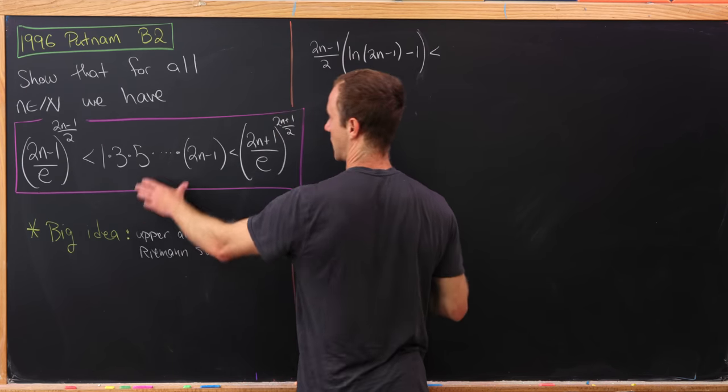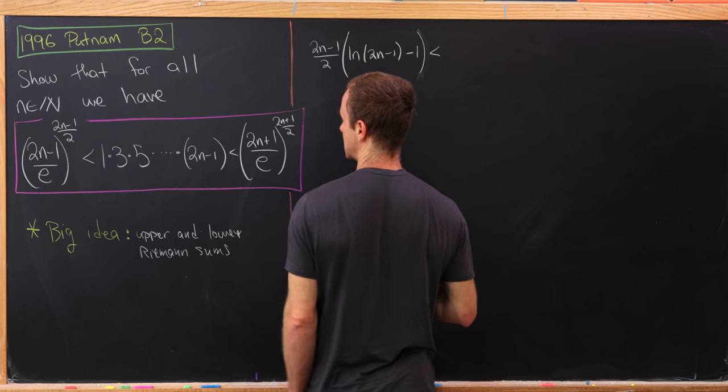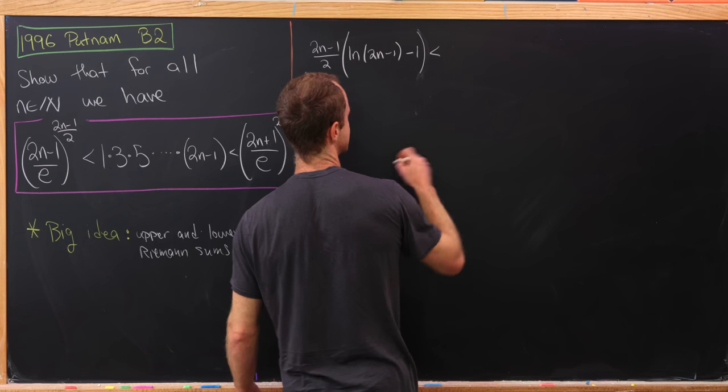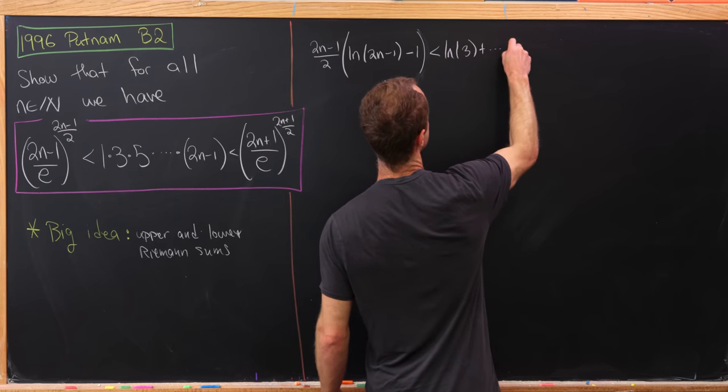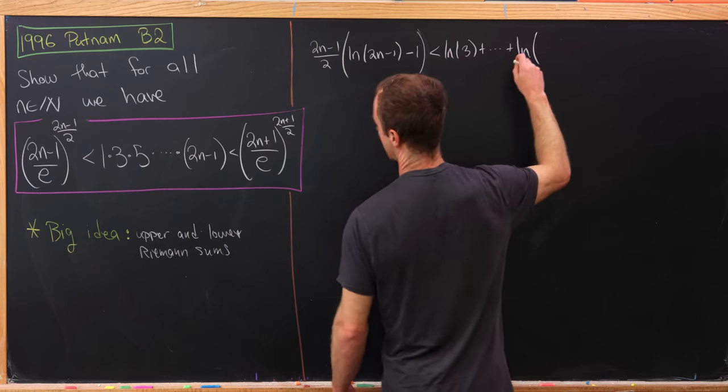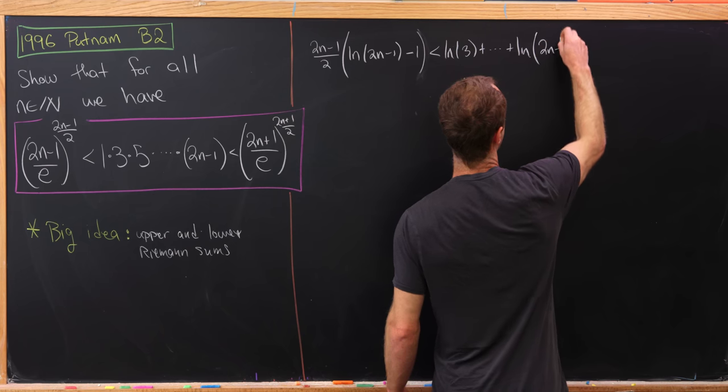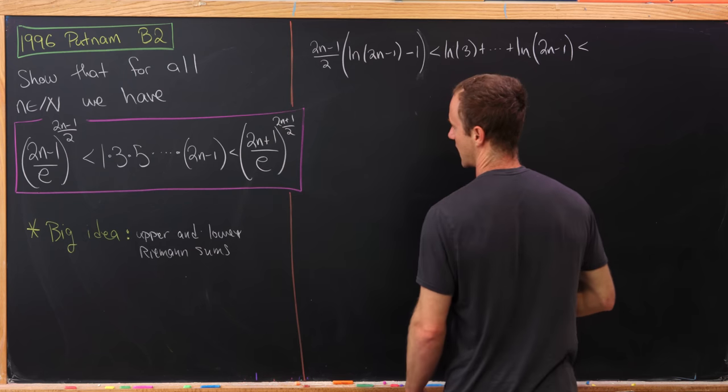Then in the middle, we'll have the natural log of each of these added up, keeping in mind that the natural log of 1 is 0. So here we have the natural log of 3 plus all the way up to the natural log of 2n minus 1. And then over here on the right, what will we have?